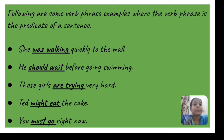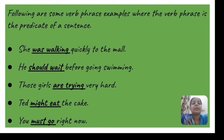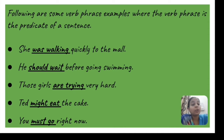Here are some verb phrase examples where the verb phrase is the predicate of a sentence. 'She was walking quickly to the mall' — 'was' is an auxiliary verb, 'walking' is the main verb, so 'was walking' is the verb phrase. 'He should wait before going swimming' — here 'swimming' is a gerund, not a verb, so the verb phrase is 'should wait'.